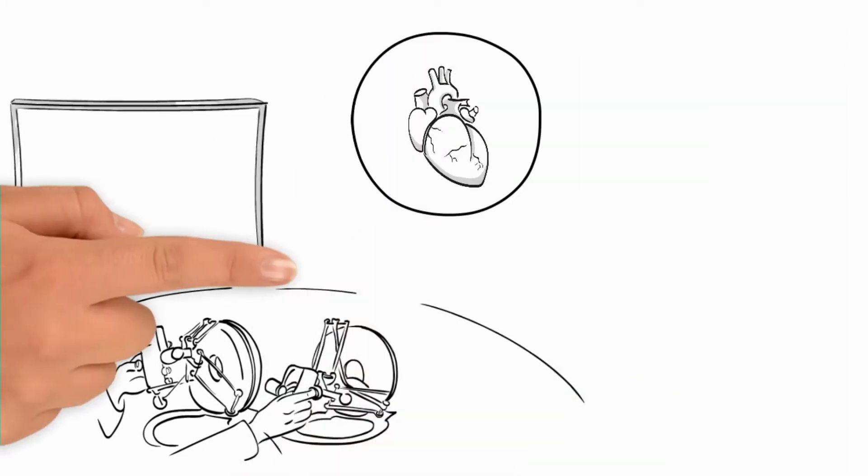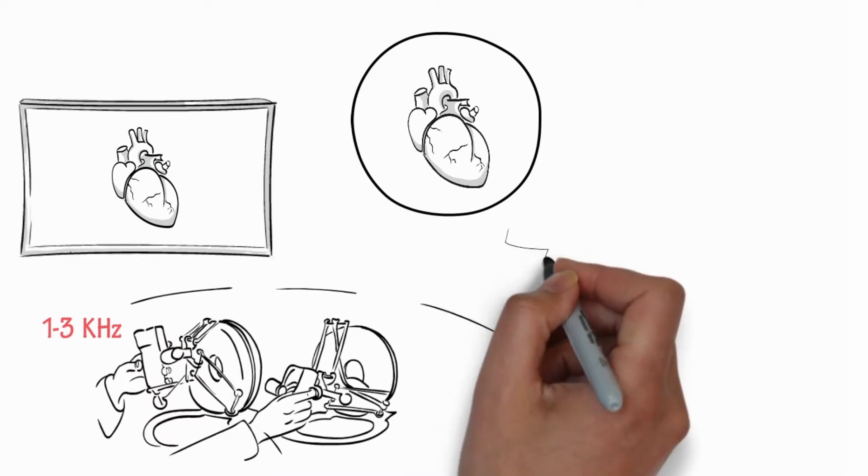Imagine a robotic system enabling a surgeon to operate on a live beating heart while perceiving it as completely still. Such a system requires a haptic feedback loop running at 3 kilohertz to connect the surgeon's feel, the most important of surgeon's skills, to remote surgical instruments.